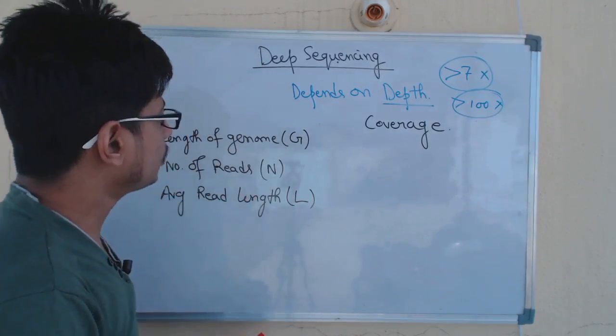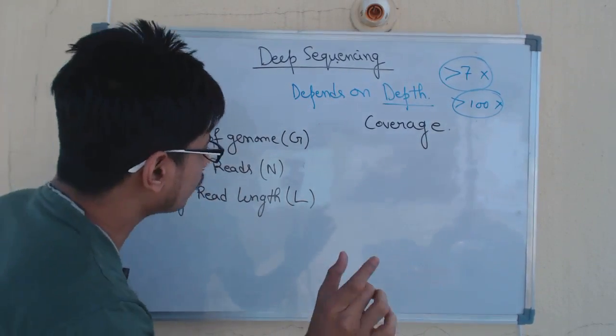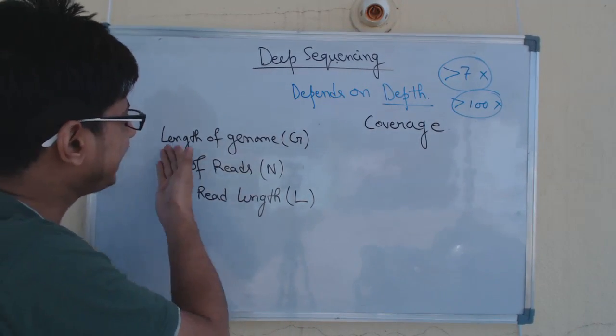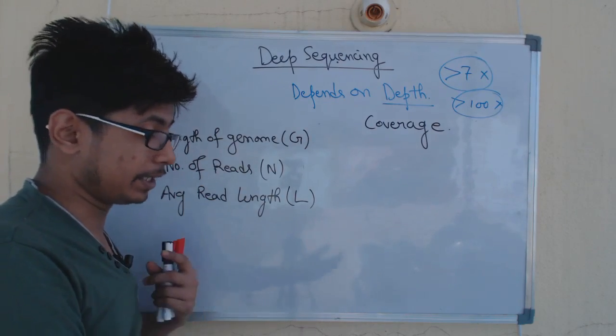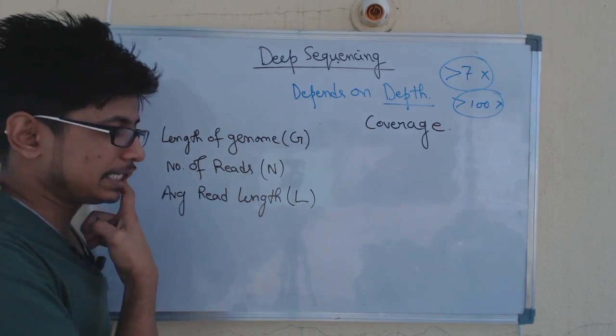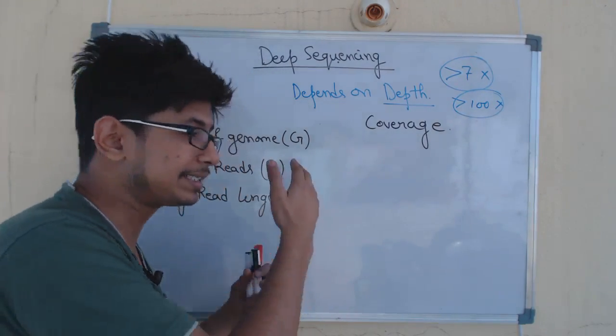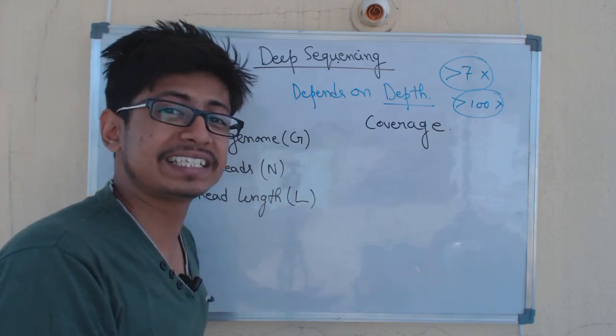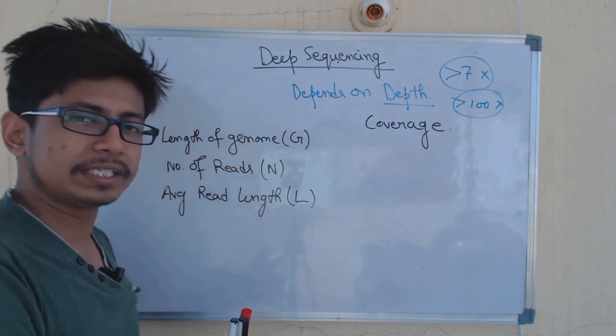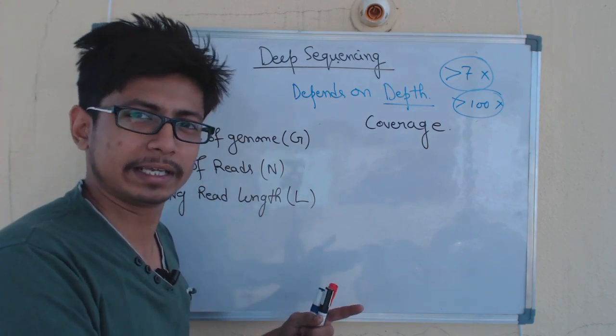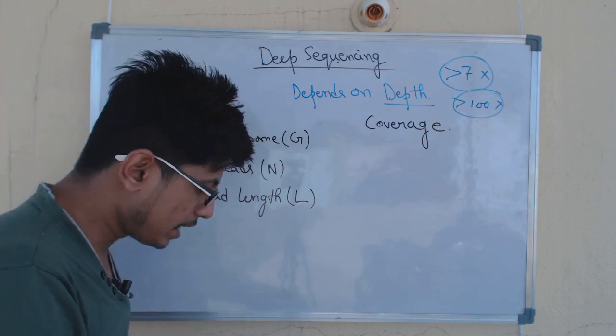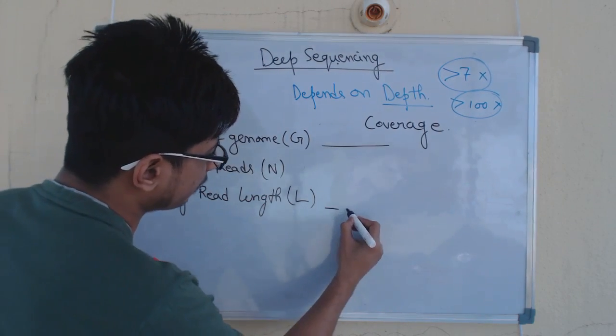There's a mathematical formula to understand the whole process based on three different parameters. One is the length of the genome—how big the genome is. Second is the number of reads: how many times you want the whole genome sequence to be sequenced by the sequencer. Third is the average read length: the fraction of the DNA every time you're running in the sequencer, that length of DNA.